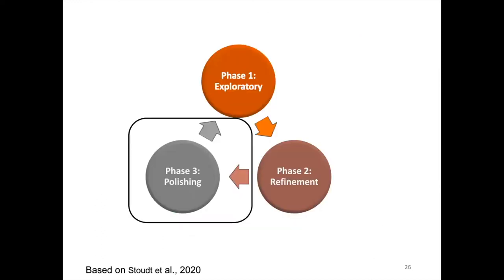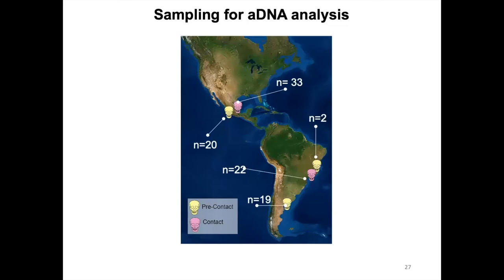Moving on to the third phase — the polishing phase — I'll explain more about two research products. We analyzed 20 pre-contact individuals from Mexico and 33 individuals from the contact period, also from Mexico. As for South America, we analyzed 21 pre-contact individuals and 22 contact individuals from Argentina and Brazil.